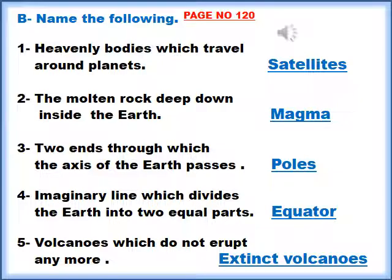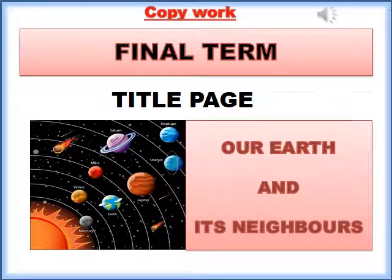Number four: Imaginary lines which divide the earth into two equal parts — these are called extinct volcanoes. This is the end of the book work. My dear students, book work has been completed.